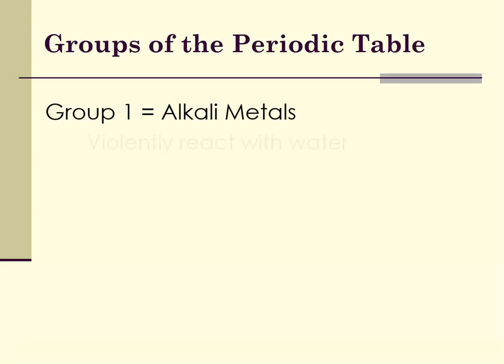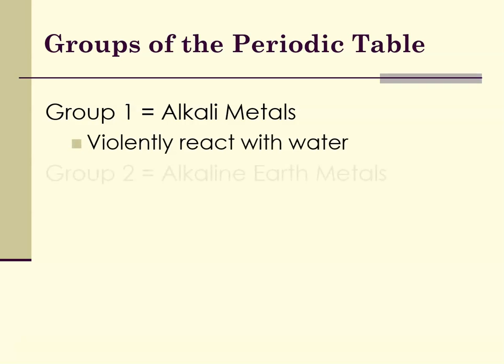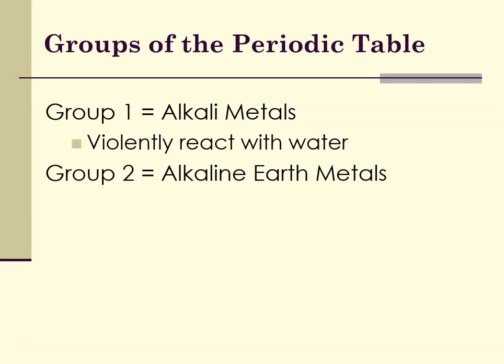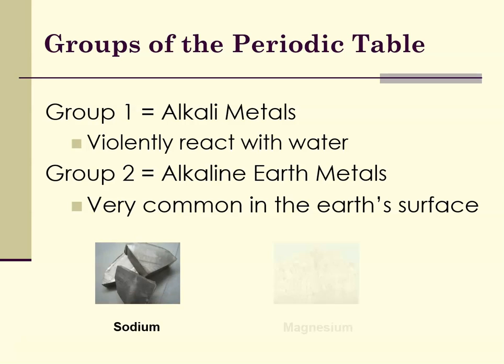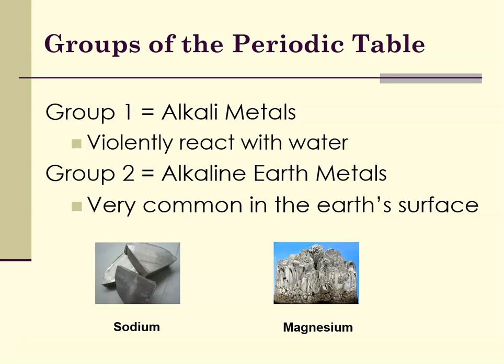The group 1 metals, the alkali metals, react violently with water — they are very reactive. In fact, you're not going to find alkali metals just existing freely because they will form compounds. The group 2s are the alkaline earths, and they're very common in the earth's surface. An example of a group 1 metal is sodium, and a group 2 metal is magnesium.